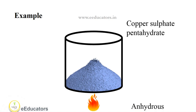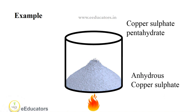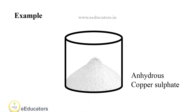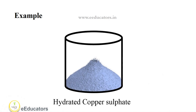Once it is heated, it loses its water molecules and becomes anhydrous copper sulfate. The blue color salt turns into a white color salt. Once the anhydrous copper sulfate is cooled, or if water is added, it turns back to its hydrated form in blue color.